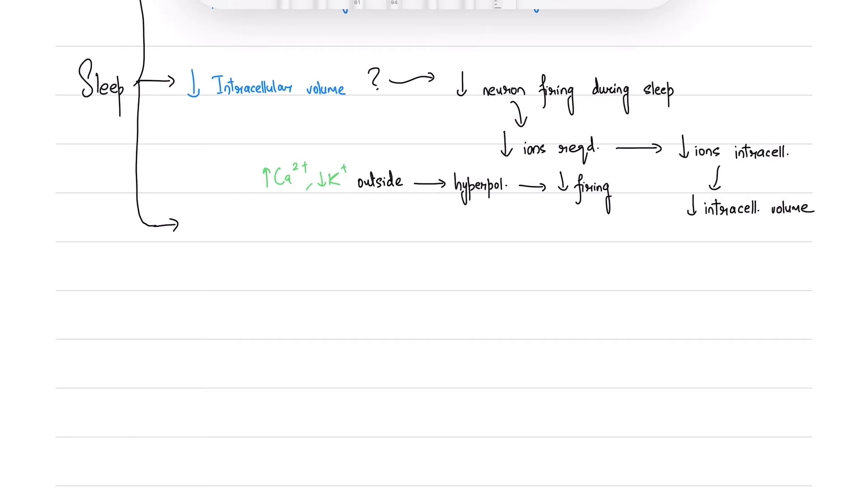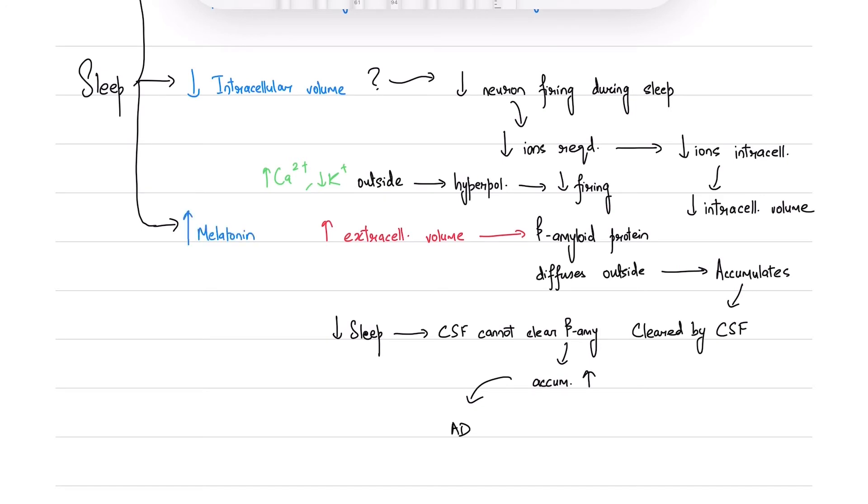This is confirmed by increased calcium and decreased potassium ions in the extracellular space, which supports hyperpolarization and thus less firing of neurons. This expansion of the extracellular space is implicated in Alzheimer's disease. The increased extracellular volume promotes the diffusion of substances which accumulate outside, like beta-amyloid peptide, which are supposed to be cleared by CSF flow. Less sleep will lead to continued accumulation of beta-amyloid protein, which is seen in the pathogenesis of Alzheimer's. Melatonin secretion is directly proportional to sleep in normal cases.